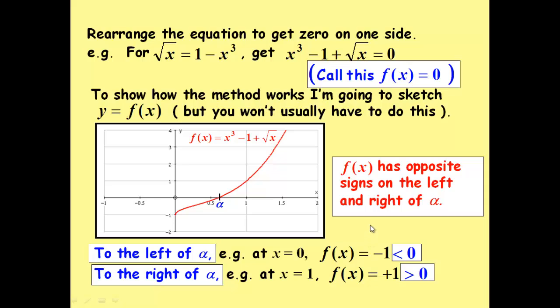So, what we now say is because the signs have changed, it means it must go through 0. Therefore, we have a solution between 0 and 1, between those integer bounds.